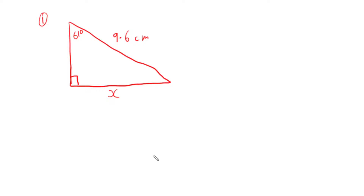And my last side I'm going to leave as an unknown X. So this means that I've got this side unknown that I'm trying to find out. I don't care about the third side — nothing's labelled on it.